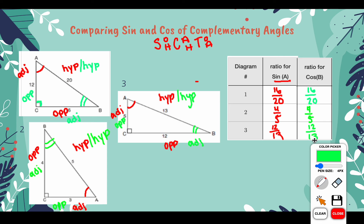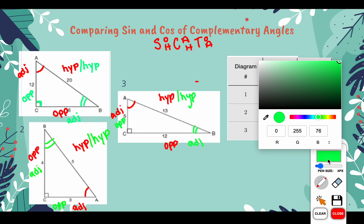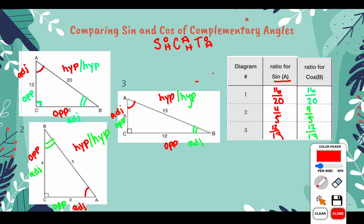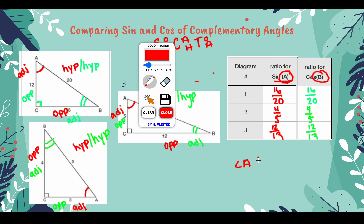What you should see here is that when we're doing the ratios of sine of A and cosine of B, we get the same exact thing. There's a special relationship — it's not just that sine of an angle equals cosine of an angle. We need to be very specific with what these angles are. Angles A and B, no matter what triangle we're looking at, are complementary.